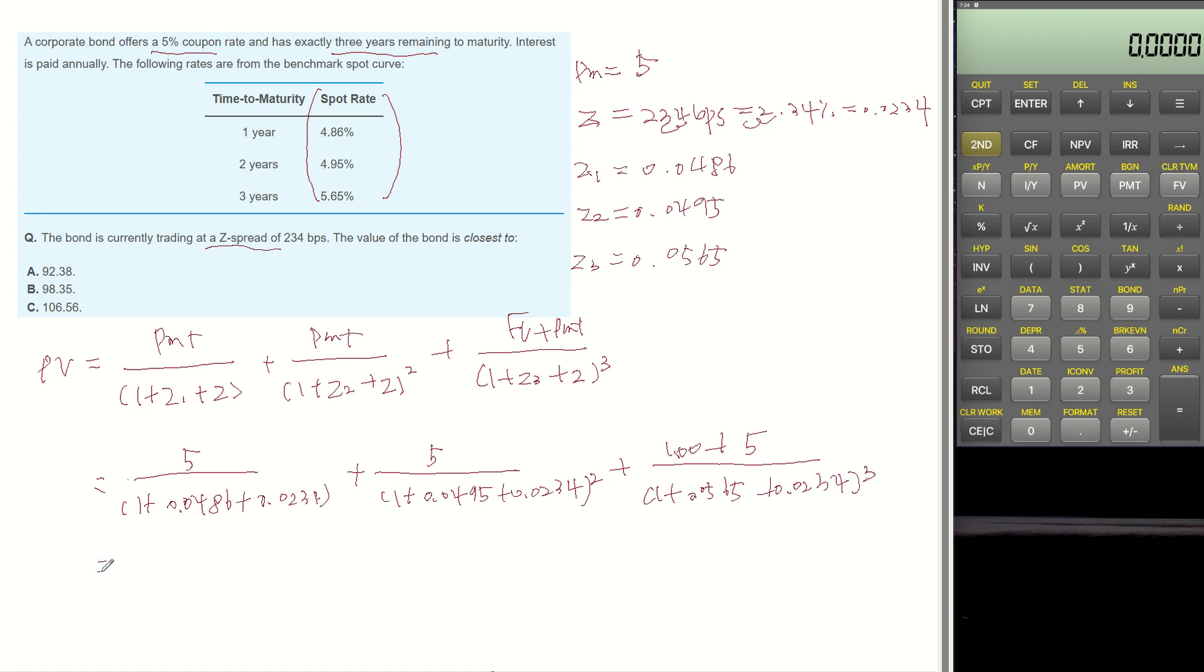This equals 4.6642 plus 4.3436 plus 83.375. The present value then becomes 92.38.